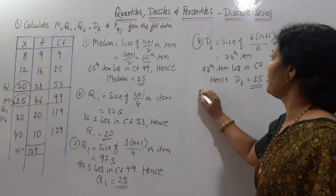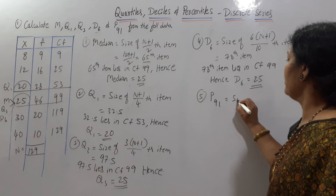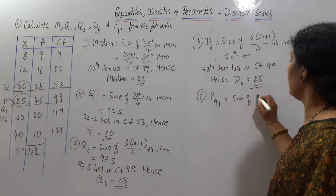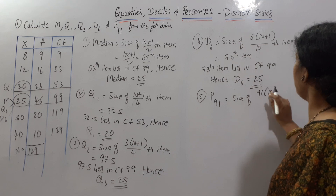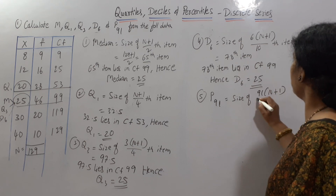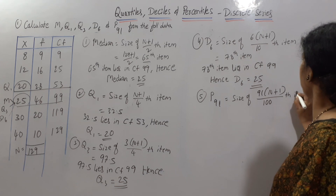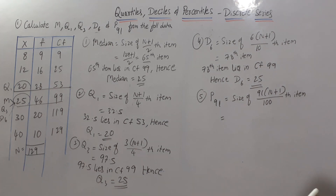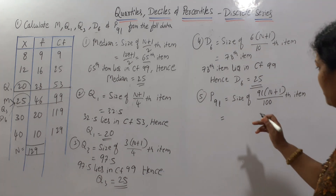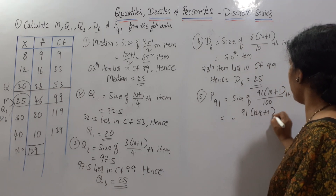Now for P91. The formula is: size of 91(N+1)/100 th item. N+1 = 130, so 91×130/100 = 118.3. We need the 118.3th item.